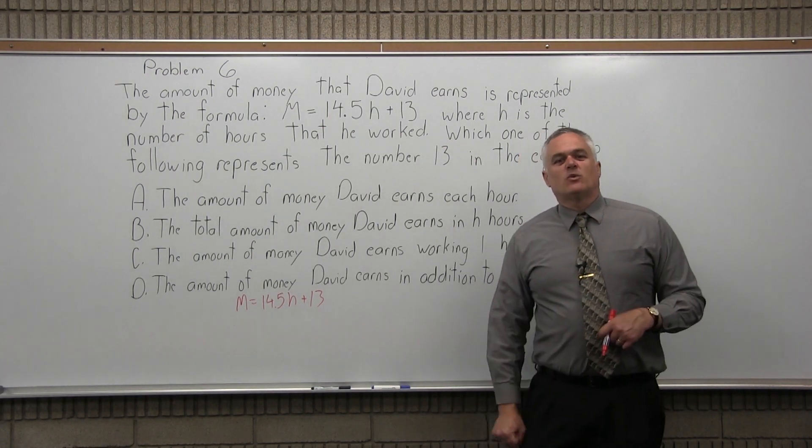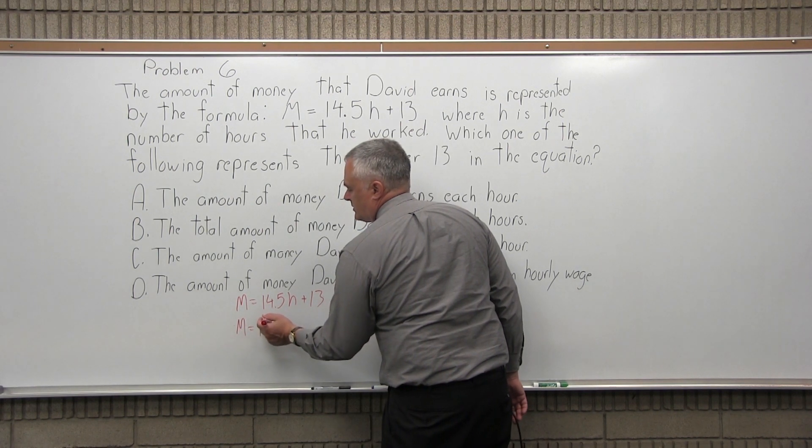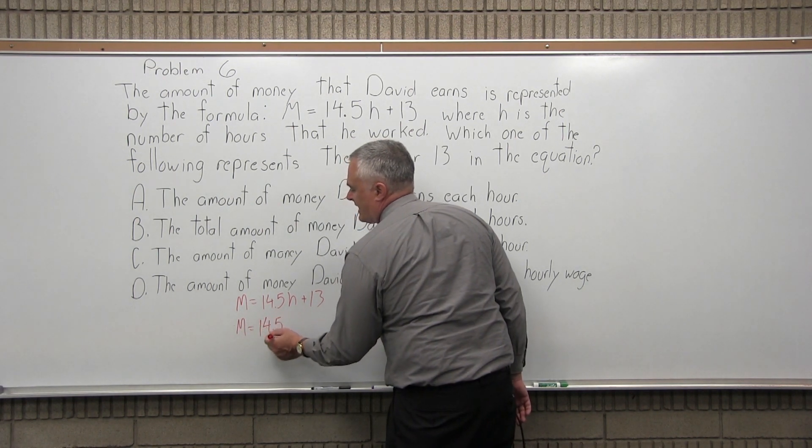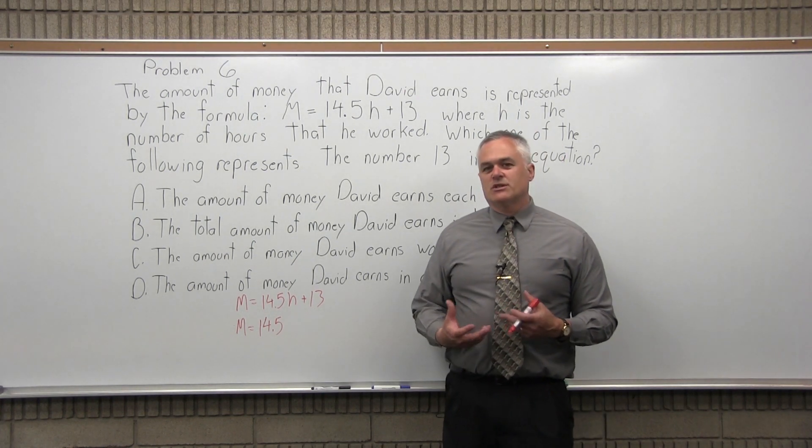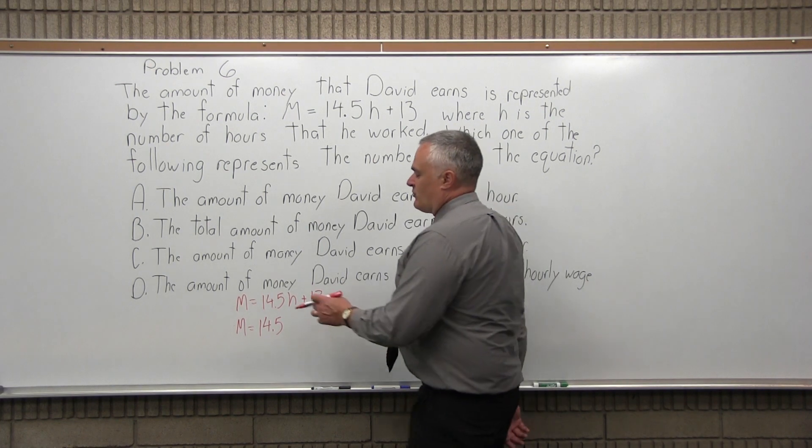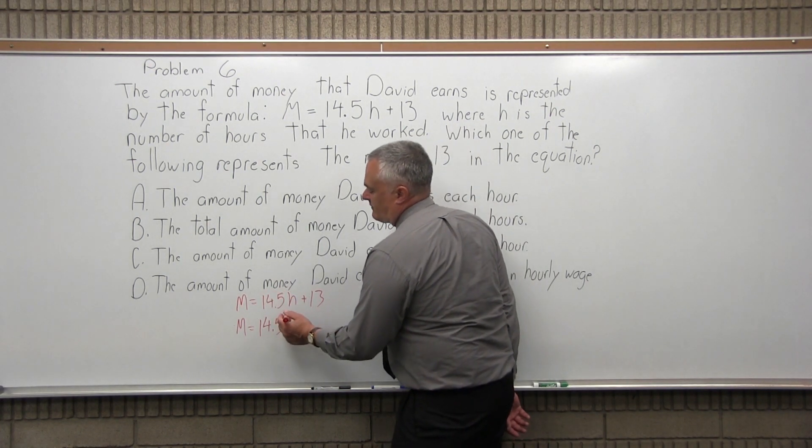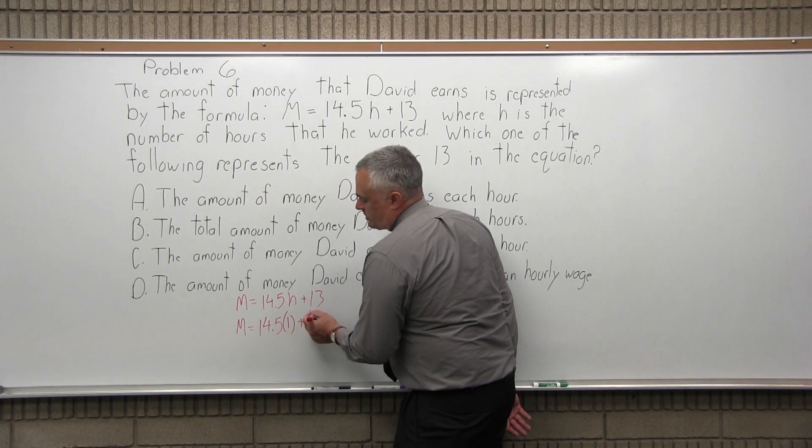How much is he going to make in one hour? So you put in a one for H. M equals 14.5H is really 14.5 times H. Where there's no operation clearly indicated, it's implied that it's a multiply. So 14.5H means 14.5 times H, so it'll be 14.5 times 1 when you work one hour, plus 13.